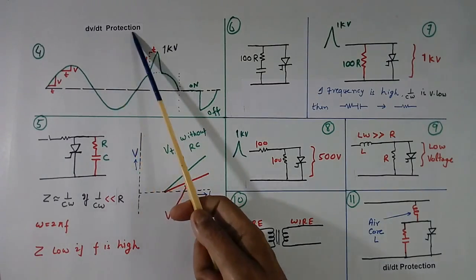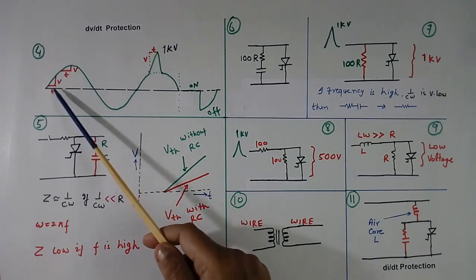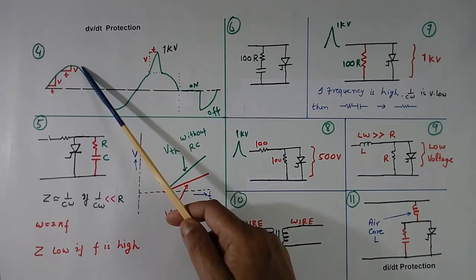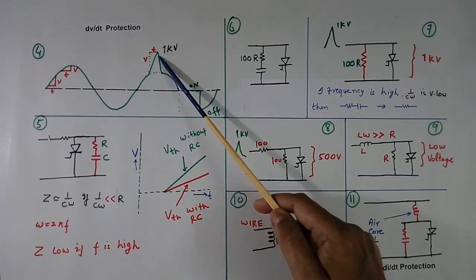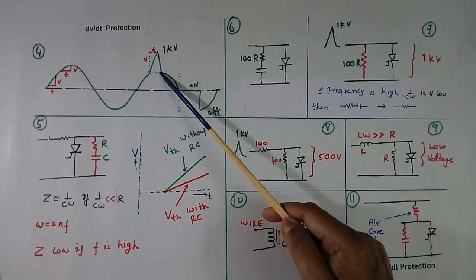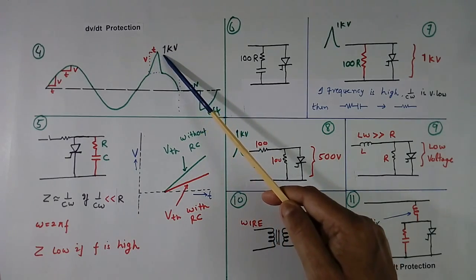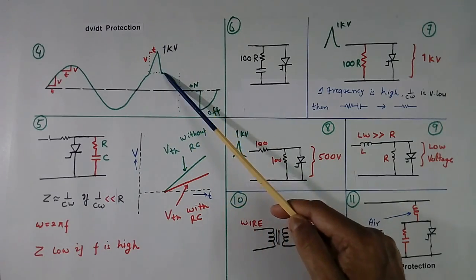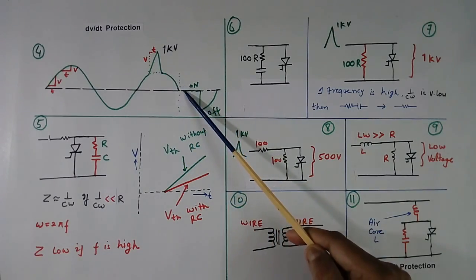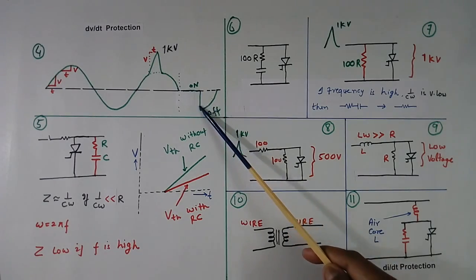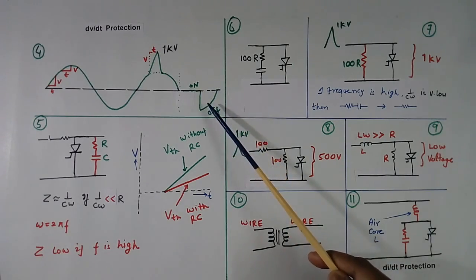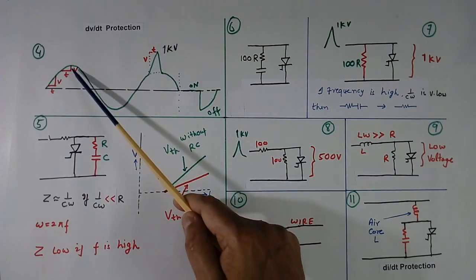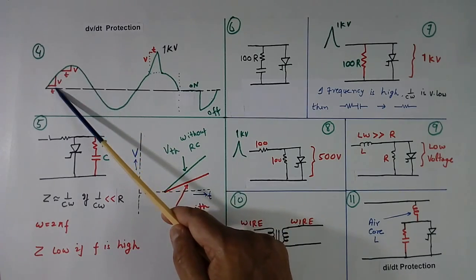Now we will discuss dV by dT protection. This I have shown one AC wave. Say this is 200V. In this AC wave, this surge is coming. Generally surge will come with high voltage and will superimpose on this. So AC wave will become like this. And here I have shown if thyristor was on and has become off. So you see, dV by dT means V by T. Here this is V, this is T.